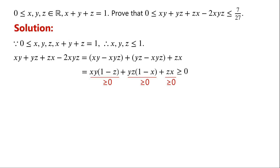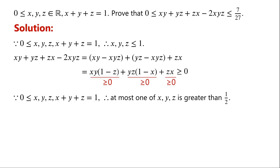It is easy. Next we will prove the right side inequality. Because x, y, and z are greater than or equal to 0 and x plus y plus z equals 1, so at most only one of x, y, or z can be greater than a half. So we consider (1/2 minus x) times (1/2 minus y) times (1/2 minus z).